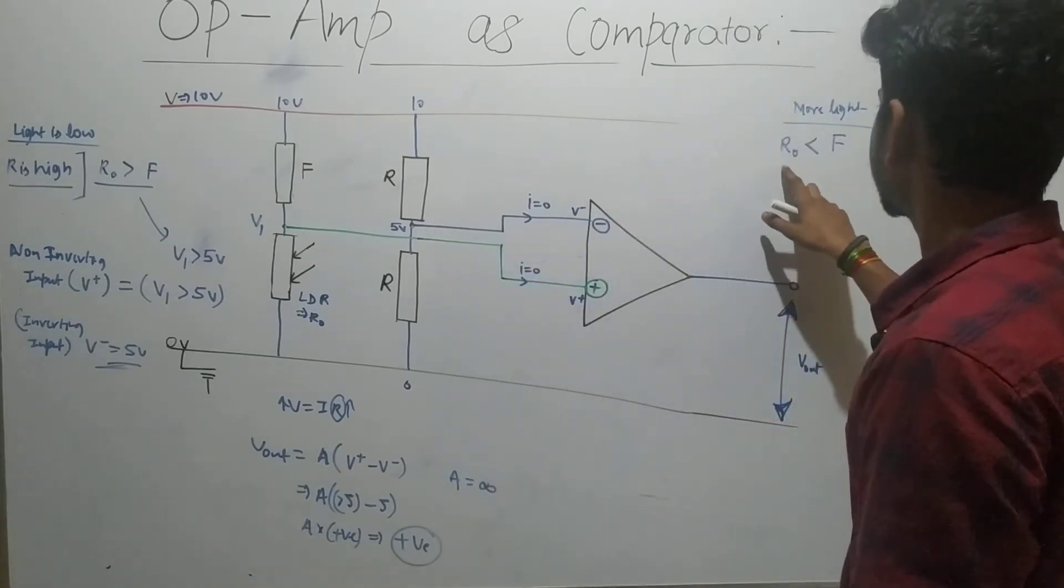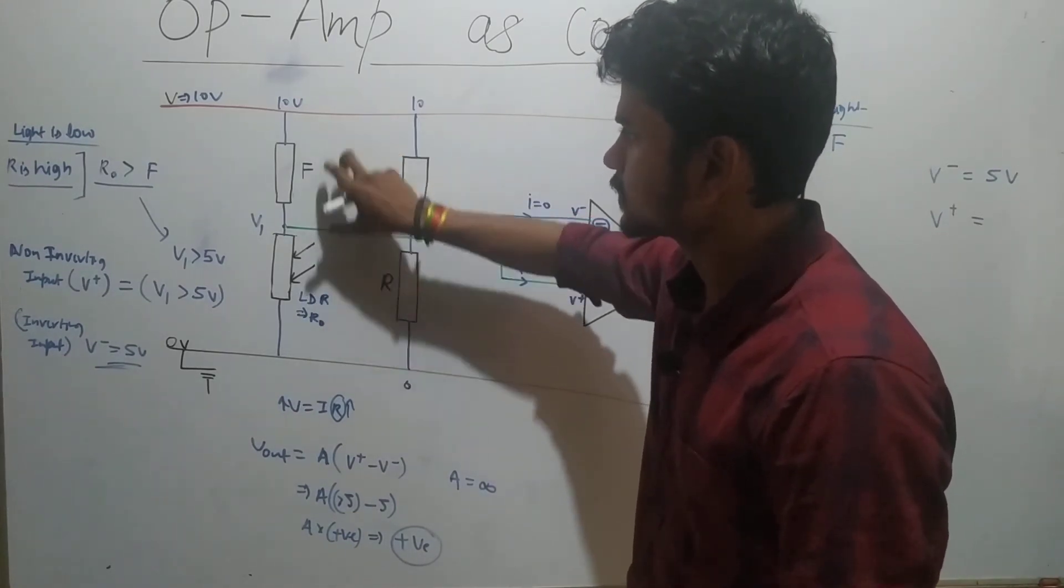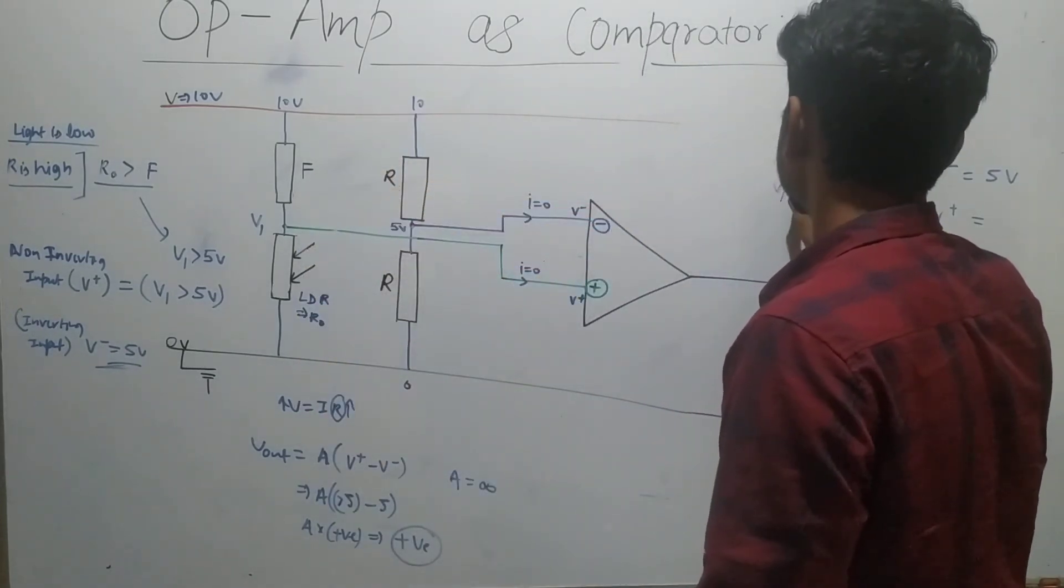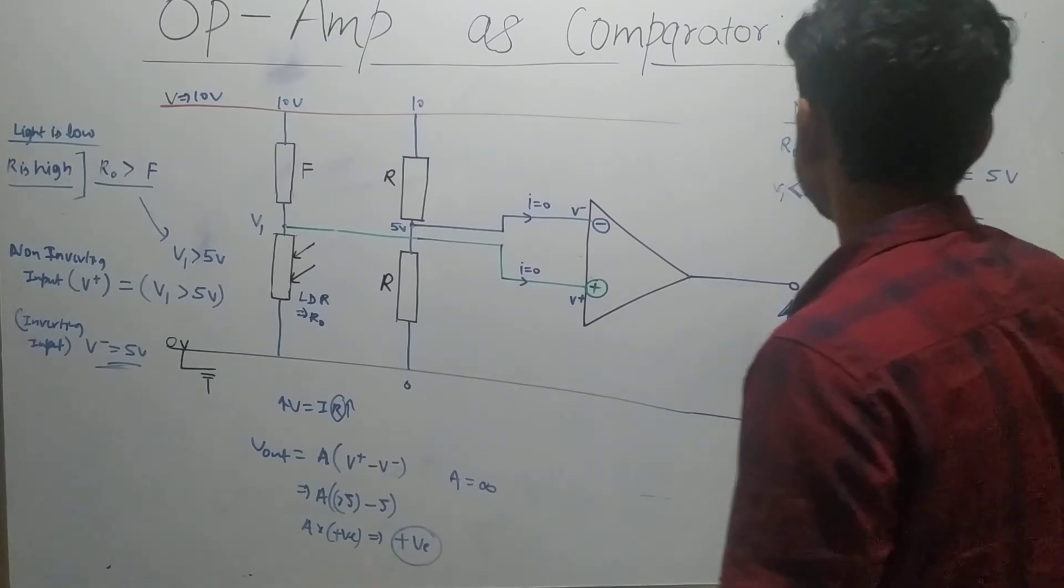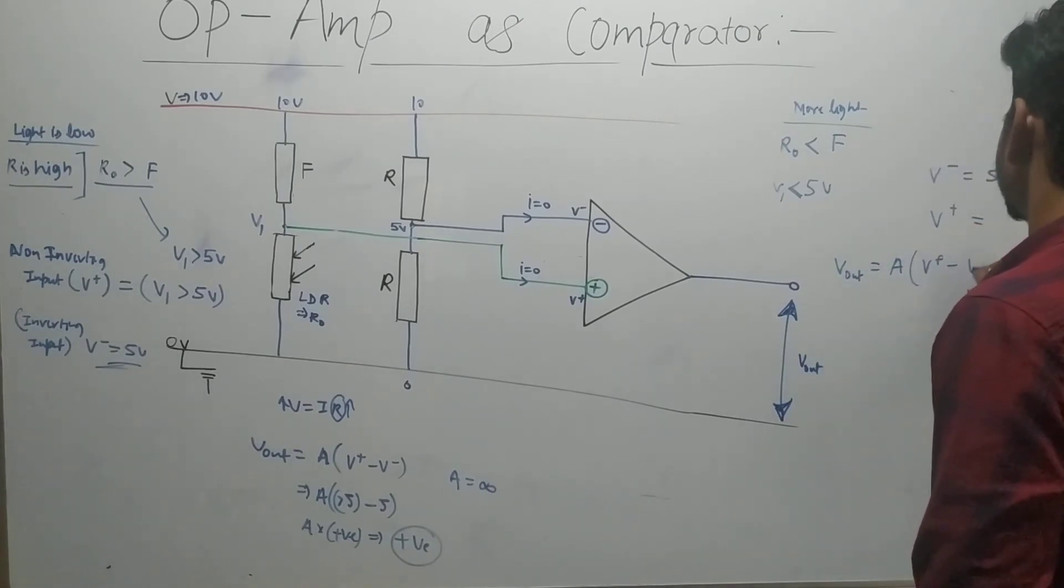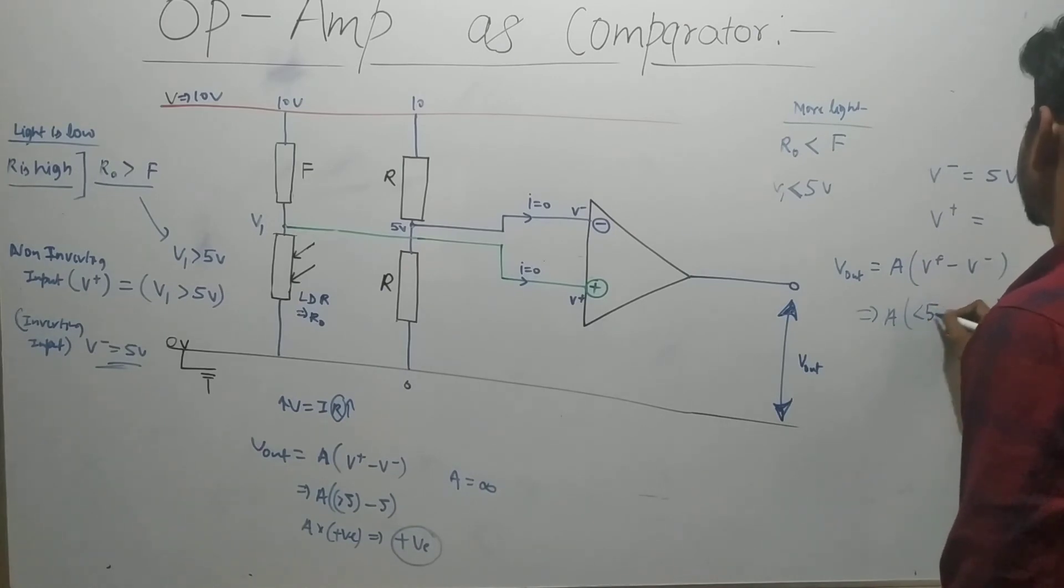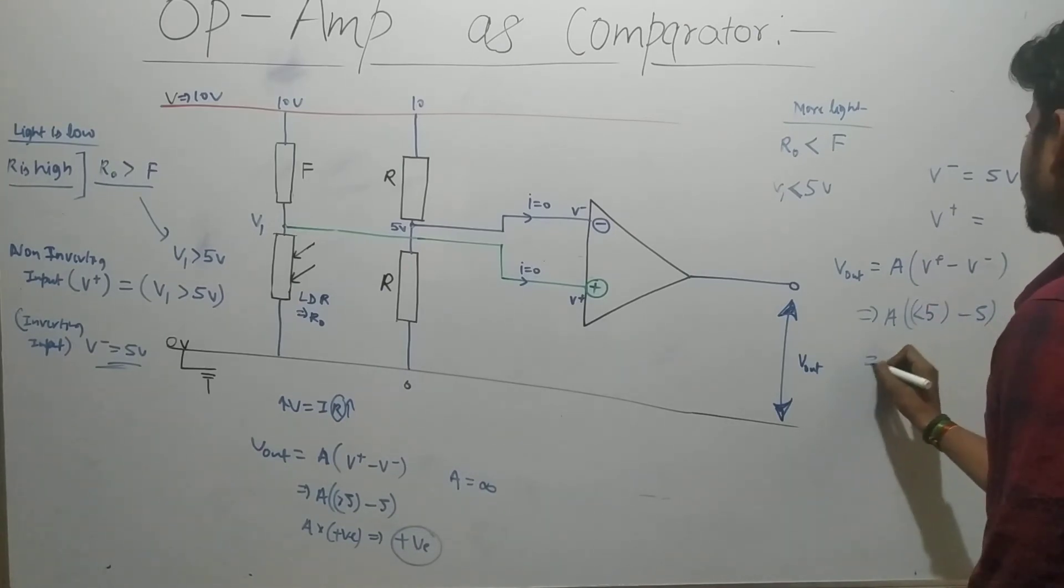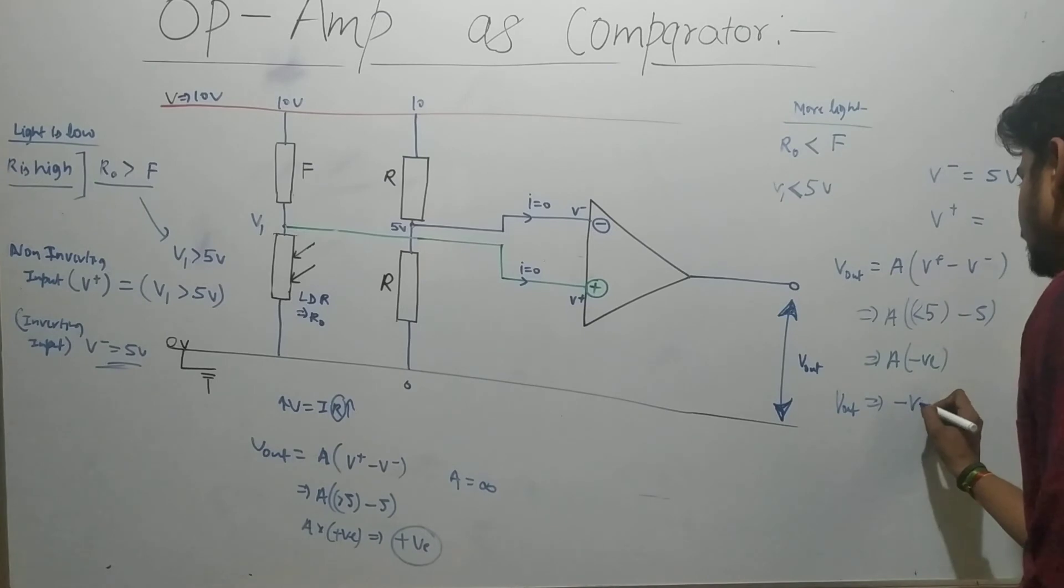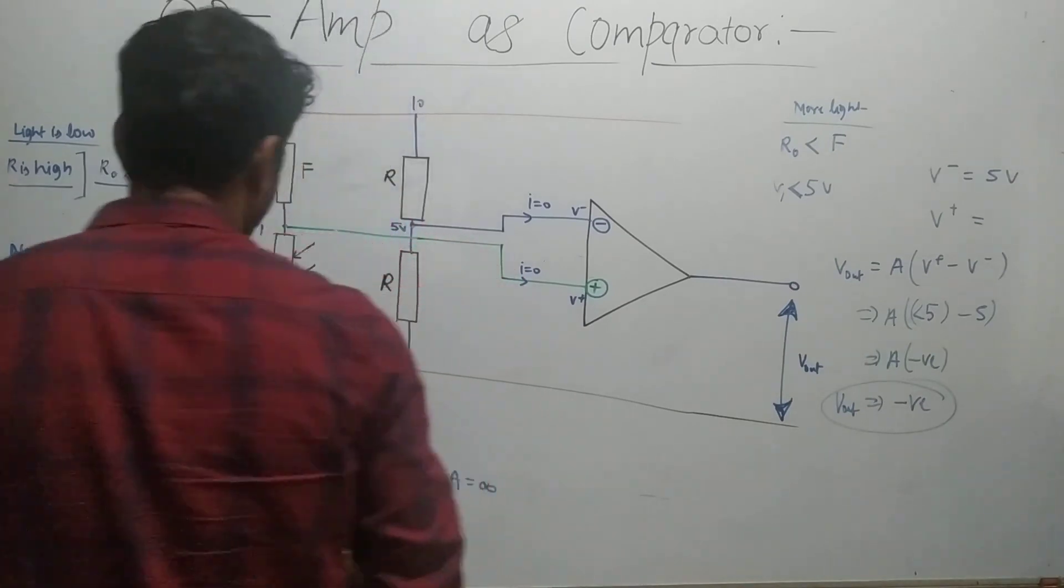If R_naught is less than R_F, this resistance is now lesser compared to this. More voltage will be consumed on the R_F side this time. So voltage V+ will be less than 5 volts. Then V_out equals A times (V+ minus V-). We have a number less than 5 minus 5, which gives a negative number. So the overall output voltage will be negative.